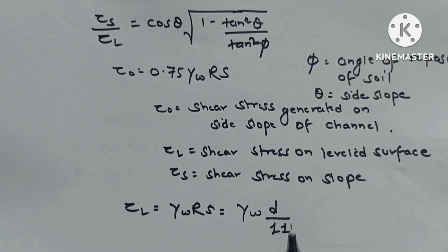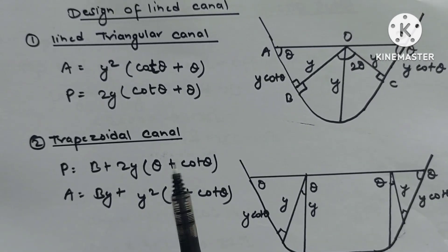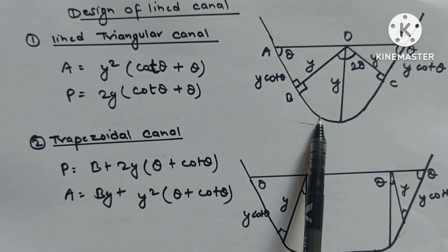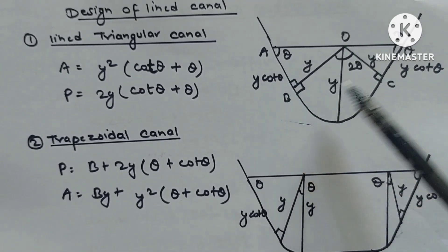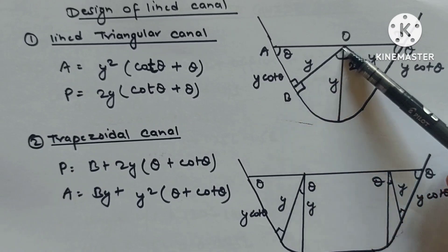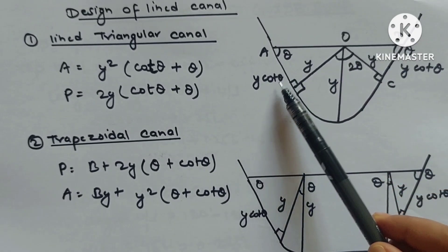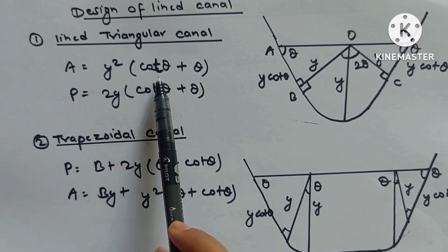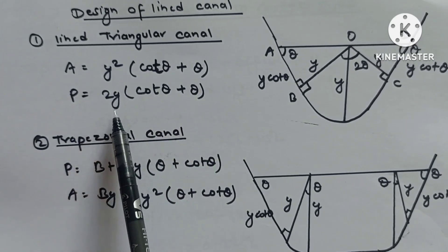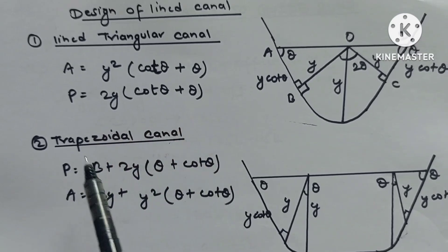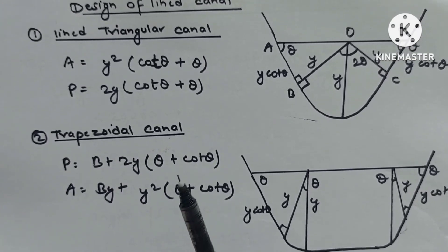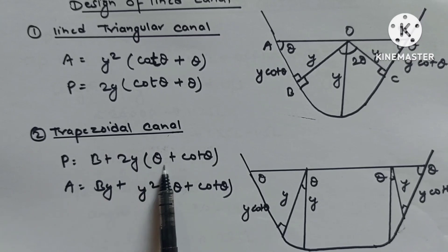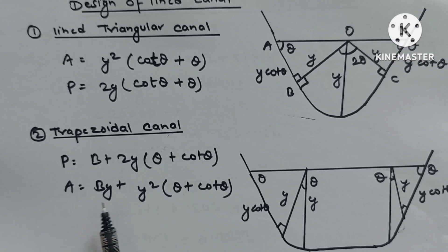Design of lined canals — triangular and trapezoidal sections. For triangular lined canal: Area = y²(cot θ + θ), P = 2y(cot θ + θ). For trapezoidal lined canal: P = b + 2y(θ + cot θ), A = by + y²(θ + cot θ).